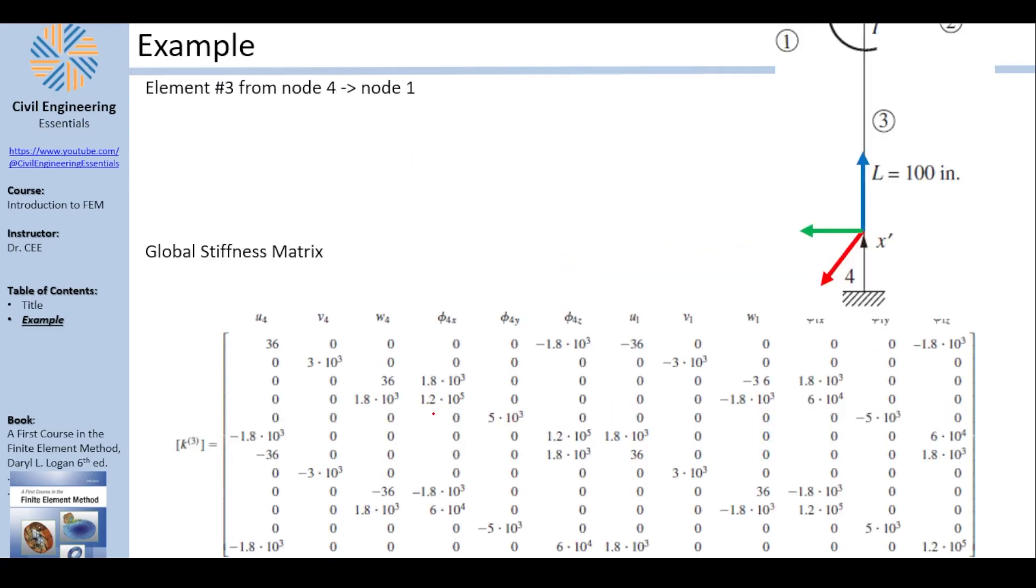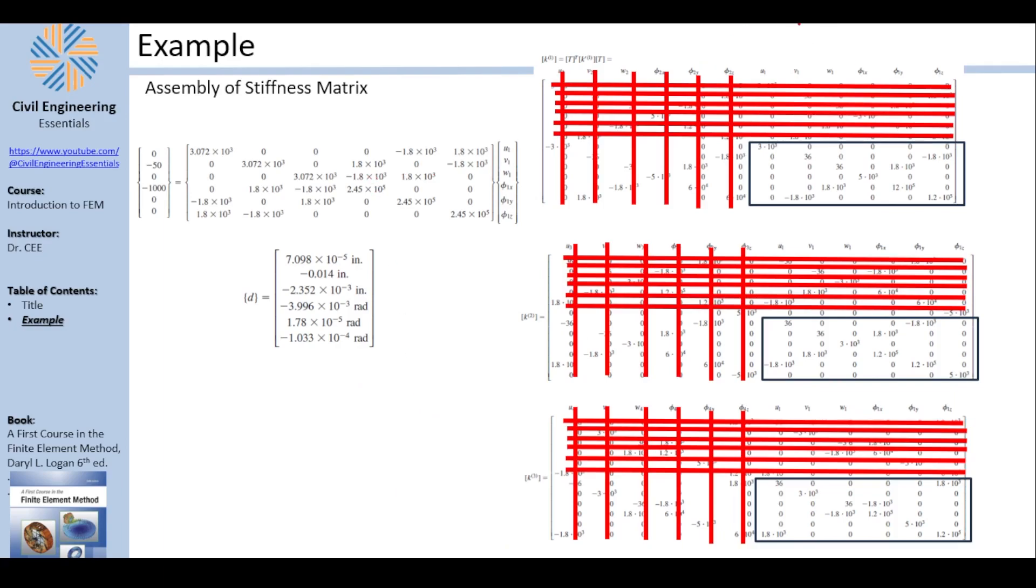To assemble the stiffness matrix, I tried to make it graphically better. This is element 1, element 2, and element 3. All of them get slashed because element 1 connects node 2, which gets slashed, with node 1, which survives. Node 2 gets slashed left and right because it's fixed. Fixed means no movement in X, Y, or Z, and no rotation about X, Y, or Z. Similarly, for element 2, it connects node 3 with 1. Three gets slashed because it was fixed. One survives. Finally, element 3 connected node 4 with 1. Four gets slashed because fixed. What survives is element 1. Adding those three together gives you this, which is the global stiffness matrix.